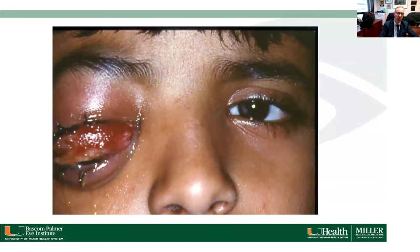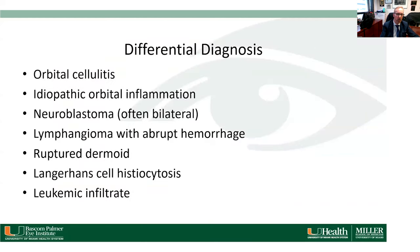This patient had a 45-day history of slowly progressive proptosis of the right eye without pain. The differential diagnosis includes orbital cellulitis, idiopathic orbital inflammation, neuroblastoma — which is often bilateral — ruptured dermoid cyst, Langerhans histiocytosis, and leukemic infiltrate.